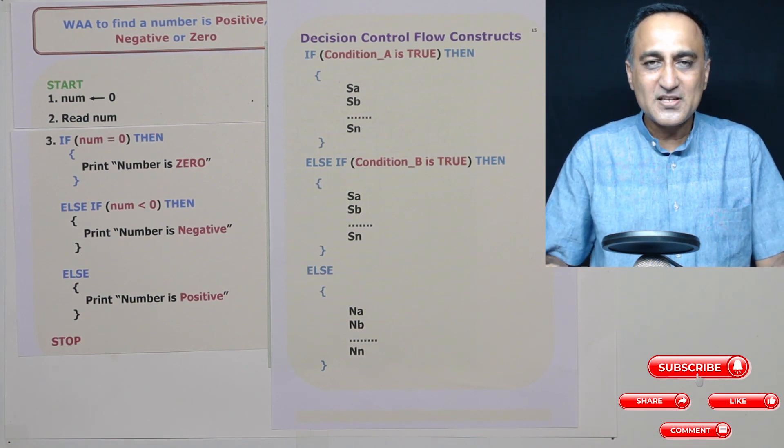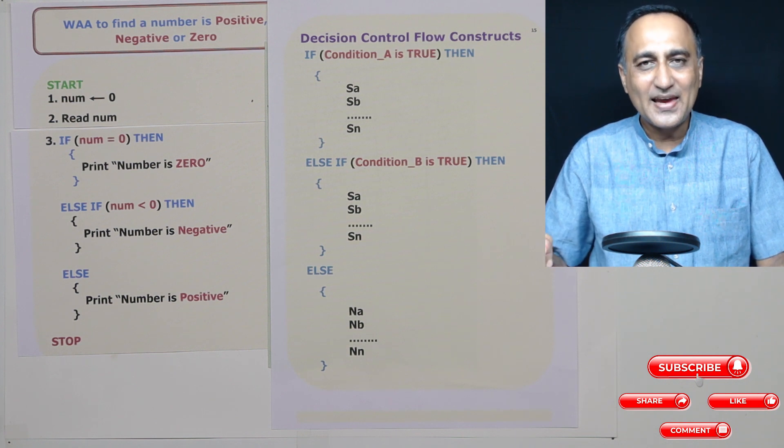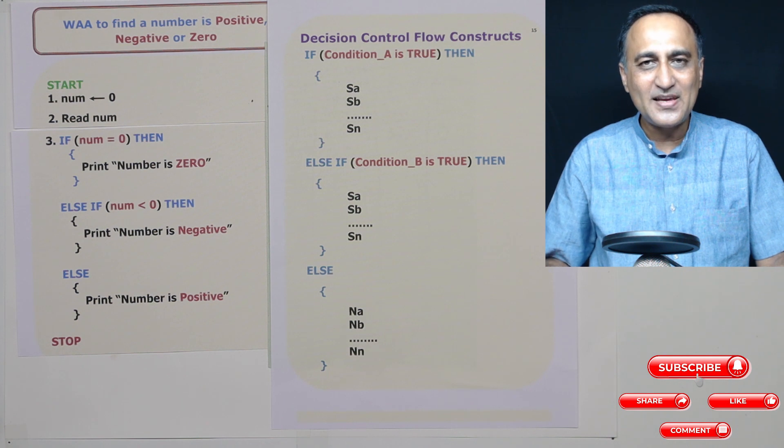So with this, we have finished the major types of decision making. I've shown you if else, and I've also shown you if else if, else if, else if, as many else if and finally followed by else which is optional.